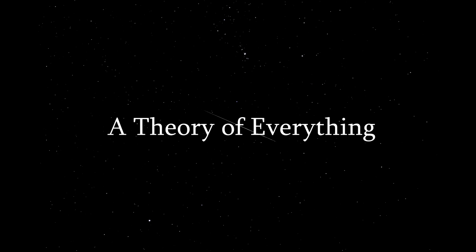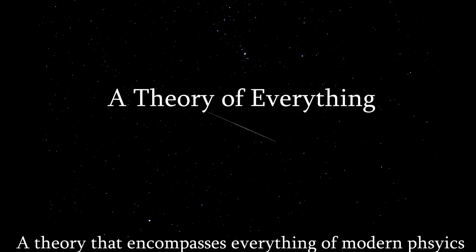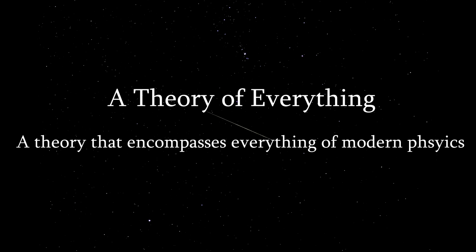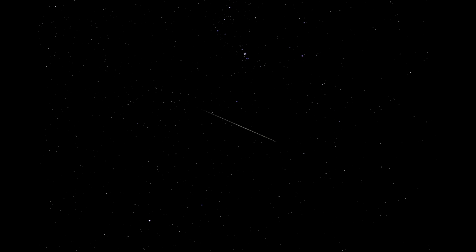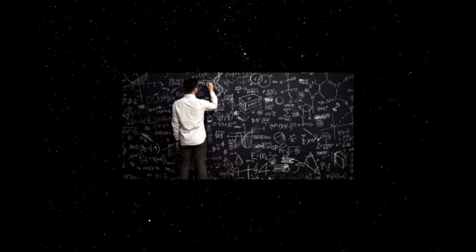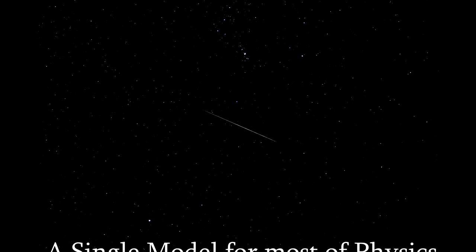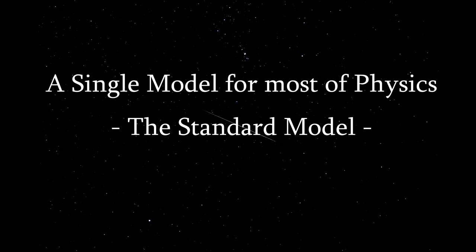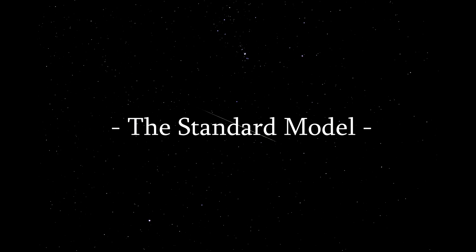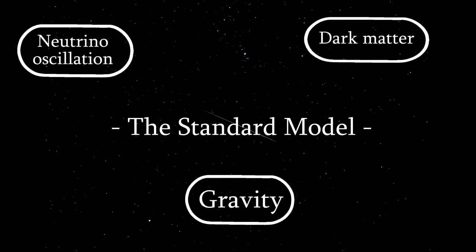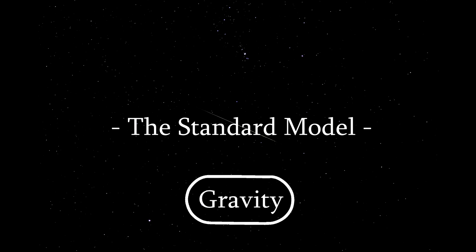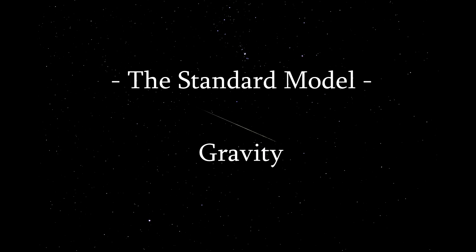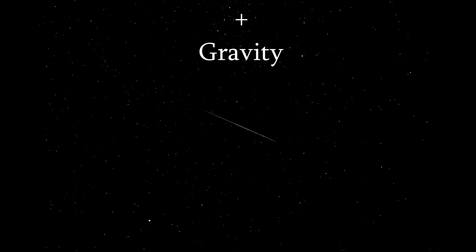What makes a theory a theory of everything? A theory of everything, in the most basic sense, is a theory that encompasses everything of modern physics. This seems like a great deal of work, but thankfully a lot of it has already been done. We in fact have a single model, humbly called the Standard Model, that describes almost all of the known universe, excluding one or two final stepping stones. The biggest of these final pieces is gravity, and a clear signpost that you have a theory of everything on your hands is if it connects gravity to the Standard Model.